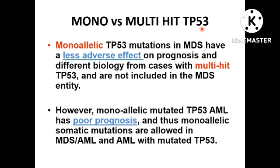Regarding monoallelic versus multi-hit TP53: monoallelic TP53 mutations in MDS have a less adverse effect on prognosis and a different biology compared to multi-hit TP53, so monoallelic TP53 mutations are not included in the MDS with mutated TP53 category. However, monoallelic mutated TP53 AML can be categorized as MDS-AML with mutated TP53 or AML with mutated TP53, because in both scenarios even monoallelic TP53 carries poor prognosis.